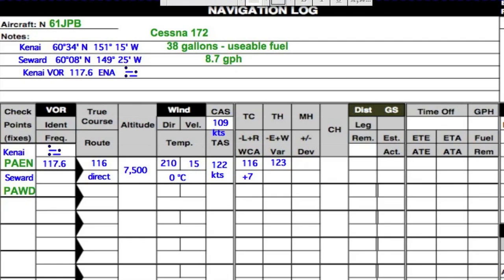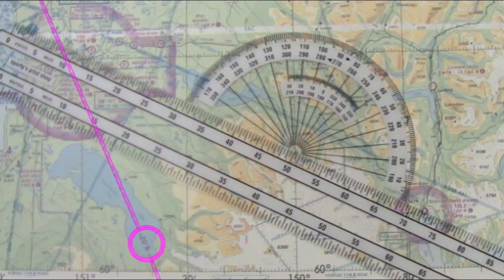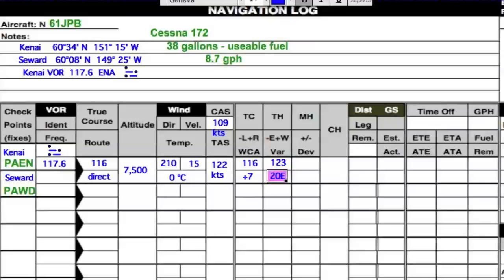The isogonic line right across our route shows 20 degrees east variation. East variation means I'm going to subtract that 20 from 123, as it says right in the legend. That gives us 103 — so we have a magnetic heading of 103°. For our purposes, we don't have any installation error, so that's zero, and we have a compass heading of 105°.